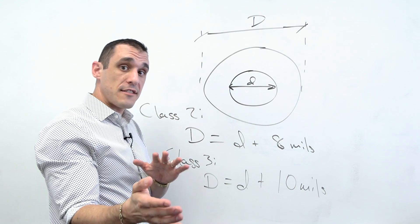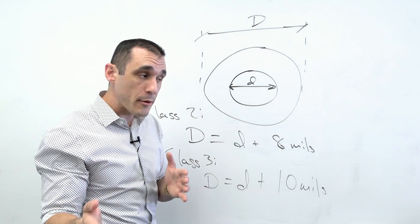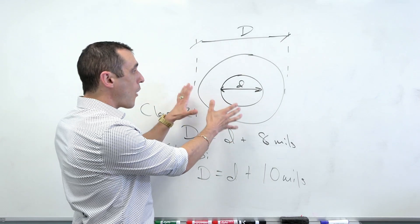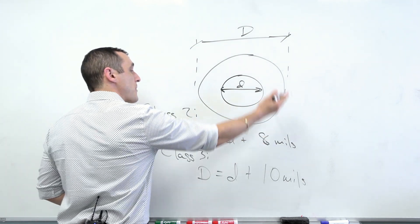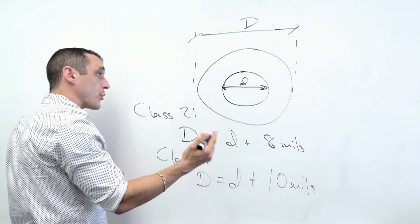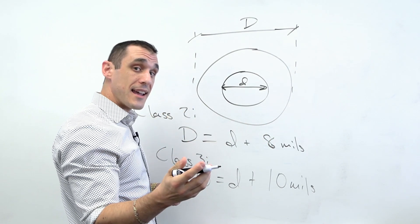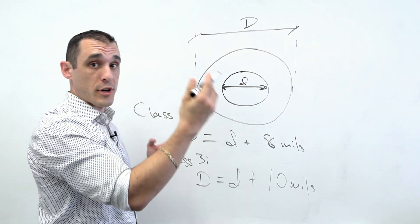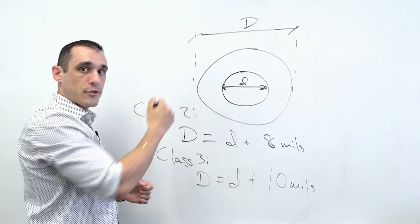Class two and class three in that context refer to the relationship between via diameter and the via pad. For class two, we generally have a via with diameter little d and a pad with larger diameter capital D, where capital D equals little d plus 8 mils. For class three, capital D equals little d plus 10 mils. This is the highest level of produceability that PCB manufacturers can meet under IPC standards. For class three, fabricators often recommend placing a teardrop on these vias for added reliability. It's not a requirement under IPC standards, but it does help. If breakout is allowed, IPC standards do say a teardrop is required if the drill breaks out from the pad — to prevent the via from being severed from the trace.